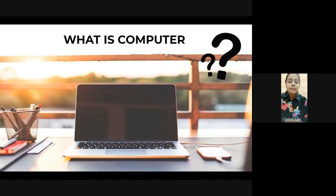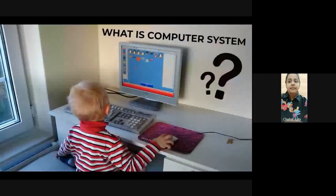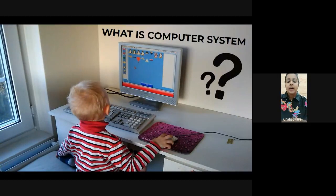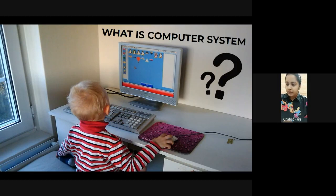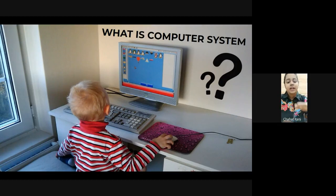Now we will see in Basics of Information and Communication Technology what is a computer. A computer is something that takes up your instructions and works on a program. A program is a set of instructions, and our computer is bound to perform those instructions one by one.